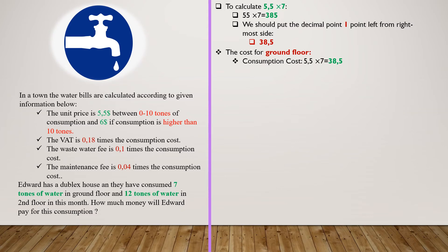So the consumption cost of the ground floor is 38.5 dollars. VAT is 0.18 multiplied by this consumption cost. We know that 0.18 is 18 divided by 100, and 38.5 is 385 divided by 10. If we multiply these fractions, we will have 6930 divided by 1000, which is equal to 693 divided by 100, which is 6.93 in decimal form.